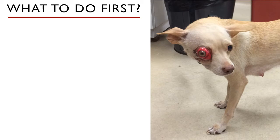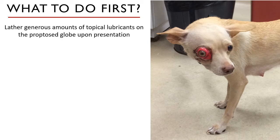Once you have figured out if you can touch it, during physical examination you must apply generous amounts of topical lubricants on the proptosed eyeball. Remember, the eyeball is kept moist and protected within the orbit by continual secretions from the lacrimal gland. Now that it is displaced outside of the orbit, it is dry, inflamed, and damaged — it needs to be kept moist and protected. Next, you must administer systemic analgesia to address the animal's pain, even if the animal is not showing outward signs of pain.